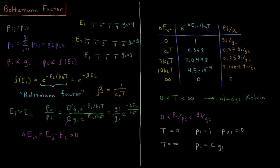But the question is: how does the probability depend on energy? The probability of our energy level has to also be proportional to some function of the energy. How does the energy of each level determine its relative probabilities? That function for how the probability depends on energy is called the Boltzmann factor.